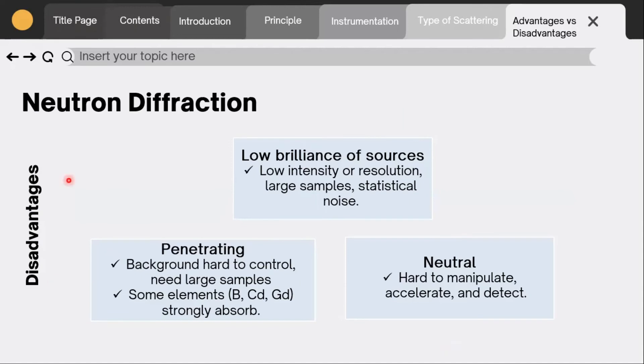These are the disadvantages for neutron diffraction. Low brilliance of sources: neutrons have low intensity or resolution, require large samples, and have statistical noise. Penetrating: neutrons have a background that is hard to control and need large samples. Some elements such as boron, cadmium, and gadolinium are strongly absorbed by neutrons. Neutrons are hard to manipulate, accelerate, and detect.